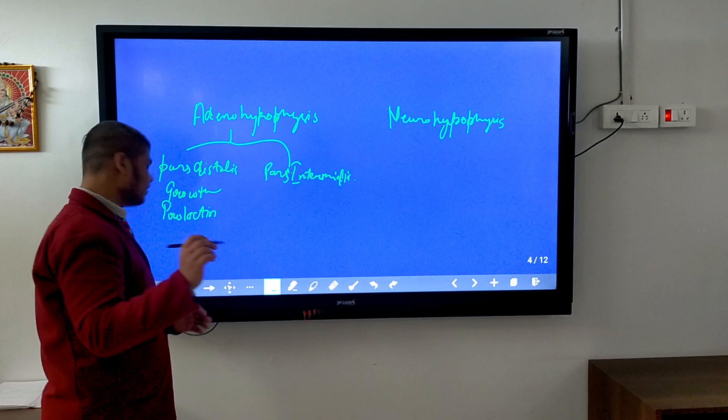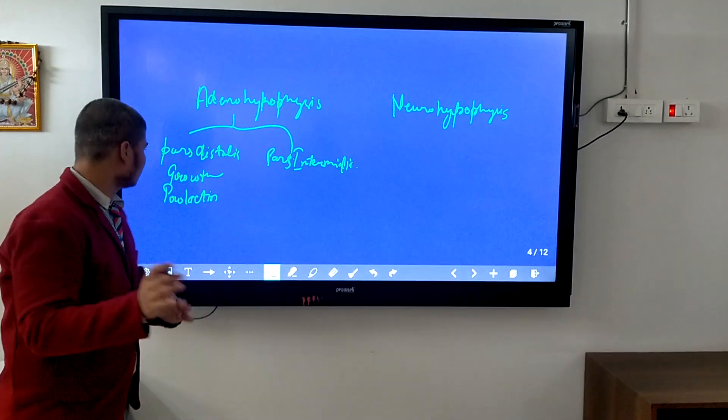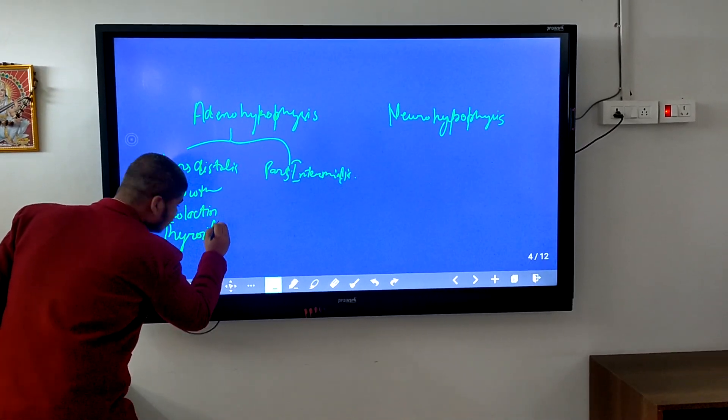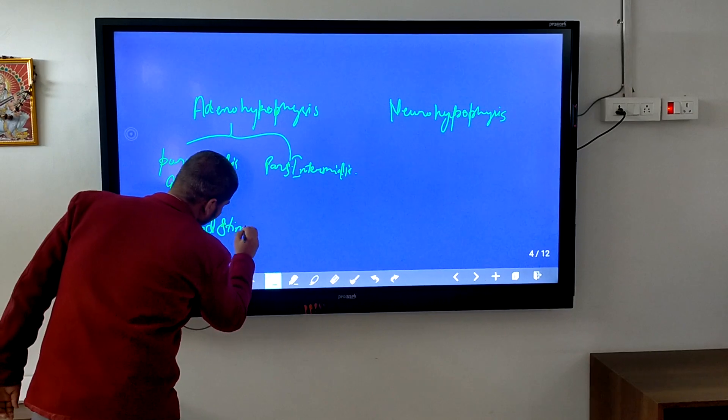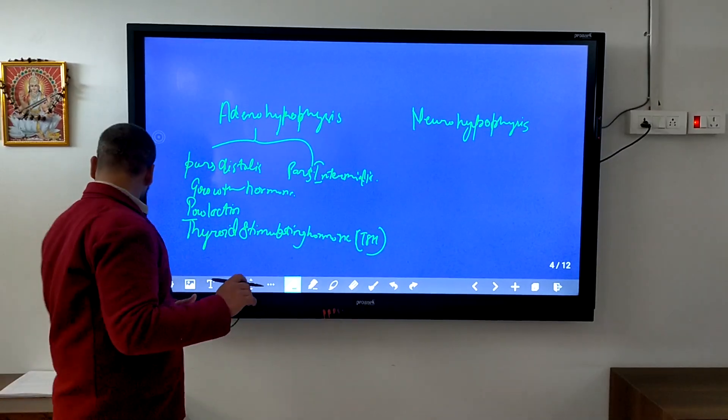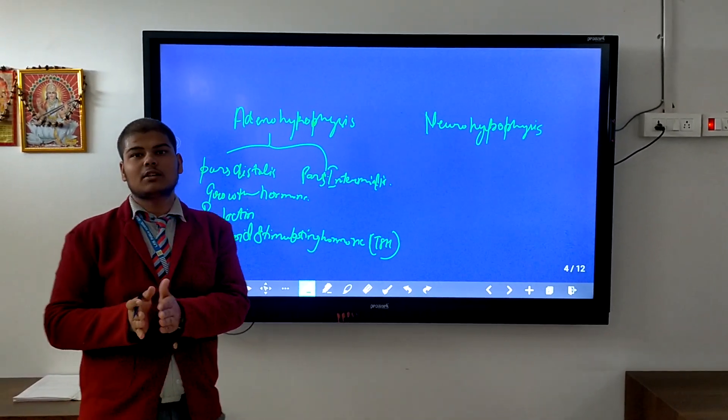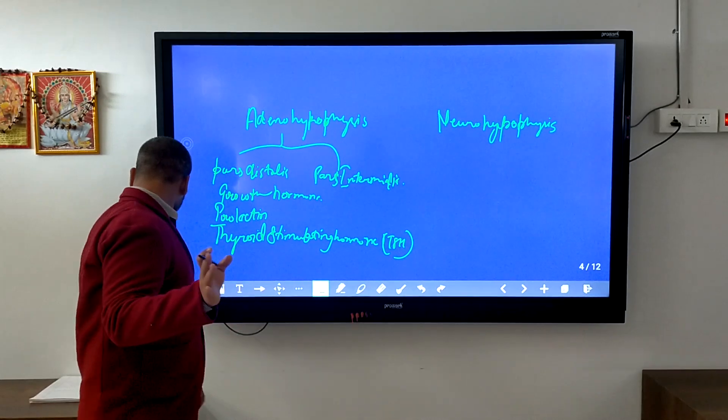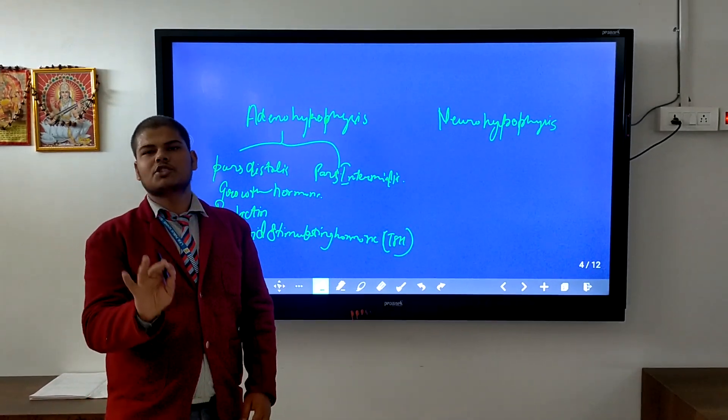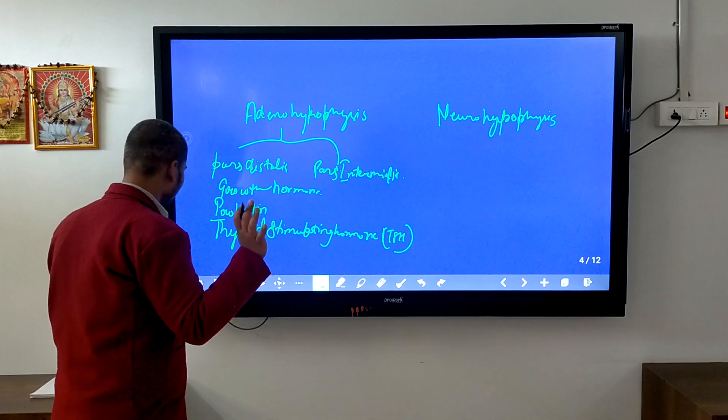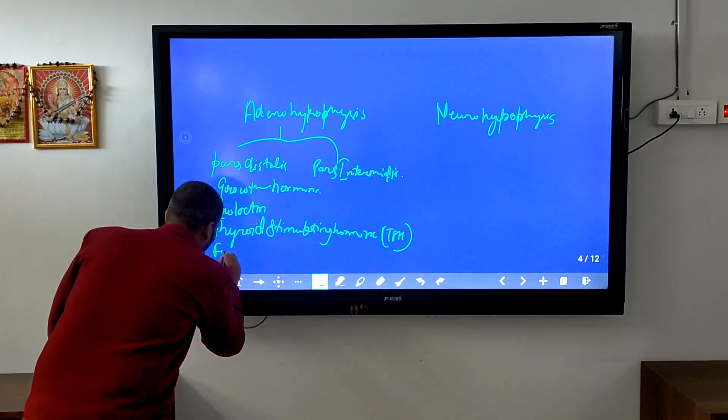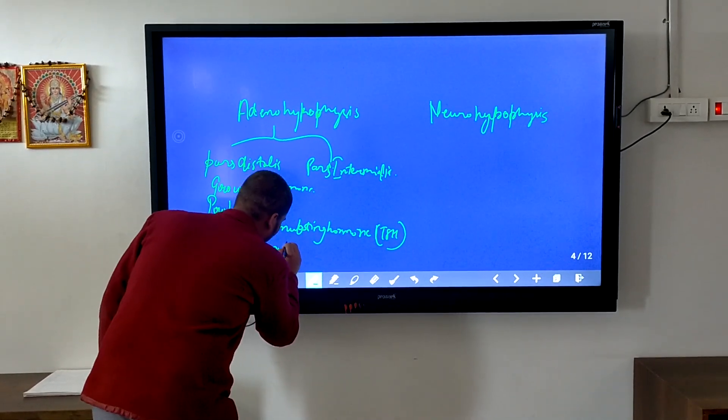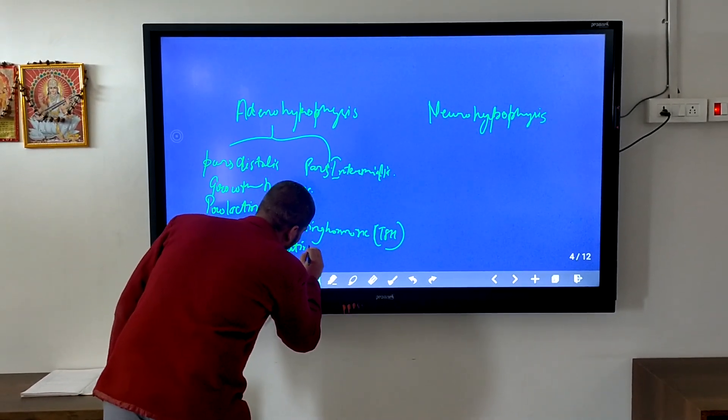The third one is thyroid stimulating hormone. The fourth one is luteinizing hormone, and the fifth one is follicle stimulating hormone.